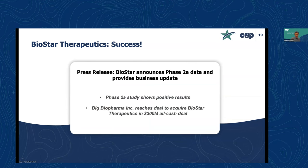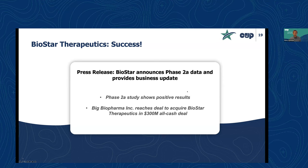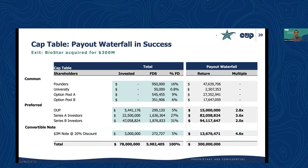Now moving into exit scenarios. Scenario one: Biostar had a good Series A, a good Series B, valuations went up and to the right. Biostar announced positive Phase 2A data — a significant milestone in biotech. A large company called Big Biopharma Inc. reaches a deal to buy Biostar for $300 million, all cash, up front, with no biobucks or milestone payments. We'll now see how that $300 million purchase price turns into dollars for the people involved.